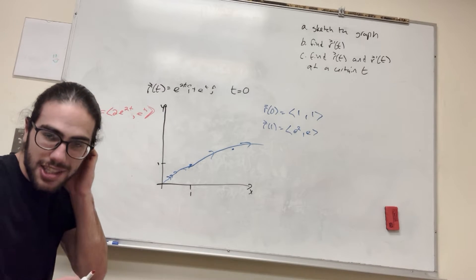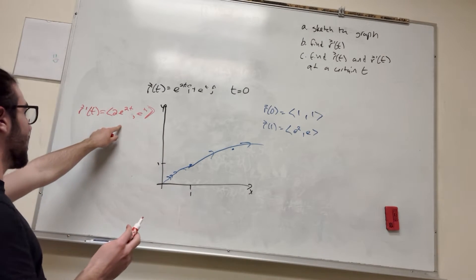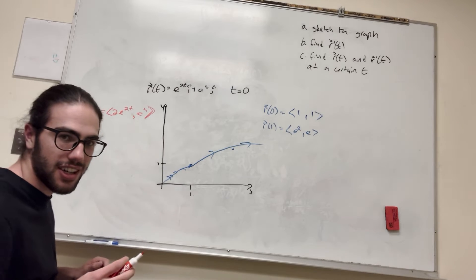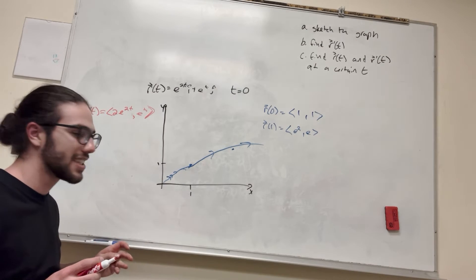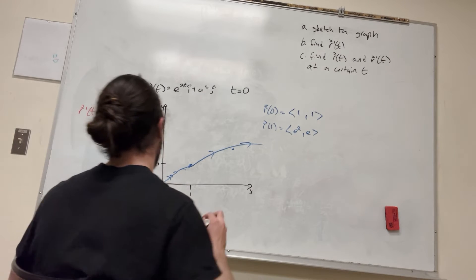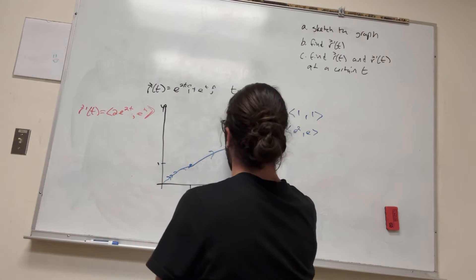So that's what r prime of t is. And basically, if you plug in any number for t here, you're going to get a vector that's like a tangent vector. Pretty cool, right? So if you were at here, it'd look like this.